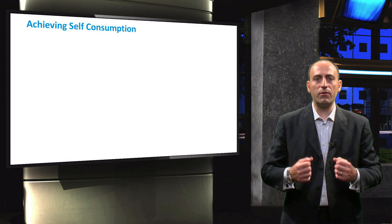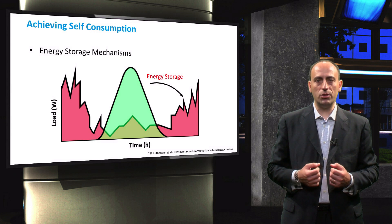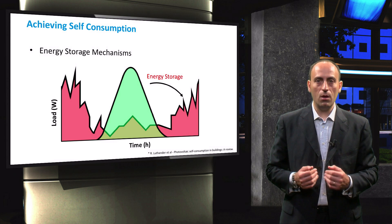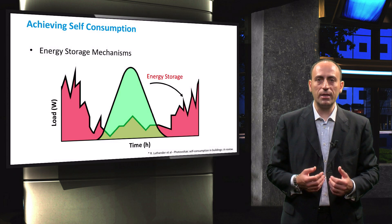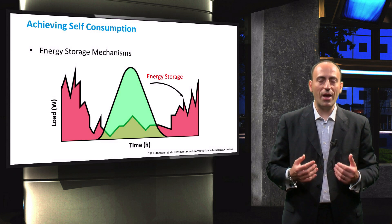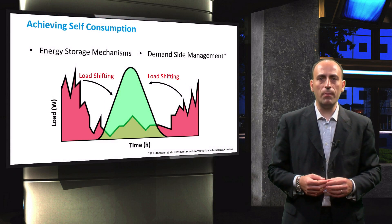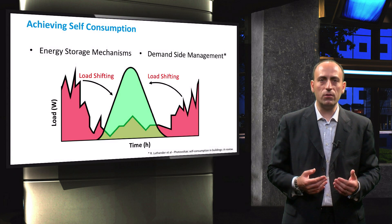So how can increased self-consumption be achieved? There are two main ways. The first option is to deploy energy storage, such as batteries. In that way, the overproduction can be stored locally, instead of being fed into the grid. With large enough storage capacity integrated into the PV system, the energy availability of the PV system can meet the load demand, reducing the interaction with the electricity grid. The second option to increase self-consumption is through demand-side management, or DSM. DSM makes use of the concept of load shifting, where the load demands of the household are shifted from time periods with surplus consumption to periods with surplus PV production. By adapting the load demand to the PV production pattern, self-consumption is increased further.